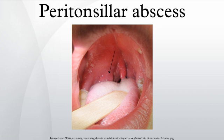Trismus is common. Physical signs include redness and edema in the tonsillar area of the affected side and swelling of the jugulodigastric lymph nodes. The uvula may be displaced towards the unaffected side. Odynophagia and ipsilateral earache can also occur.